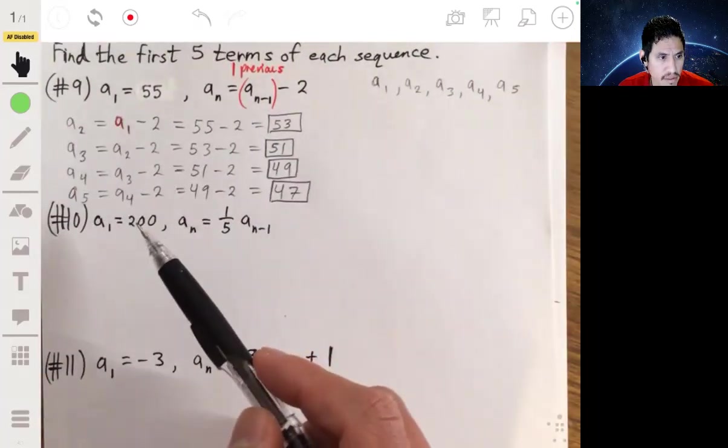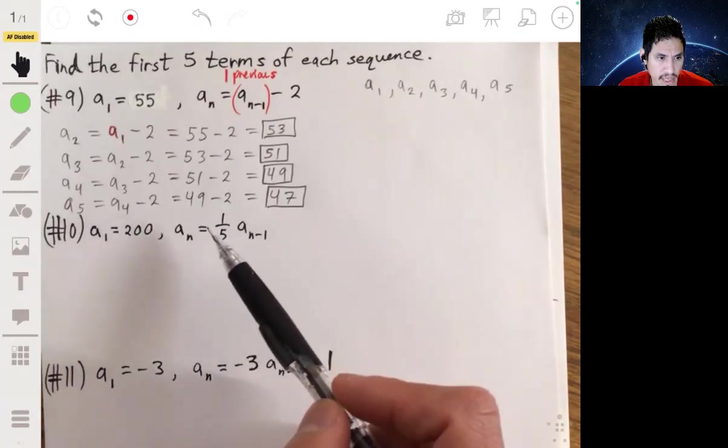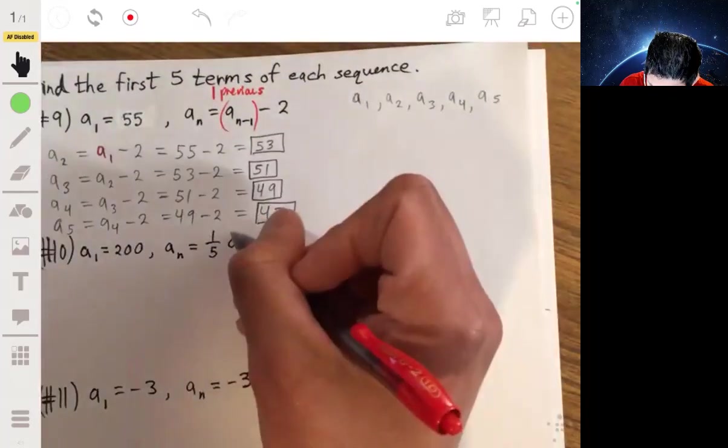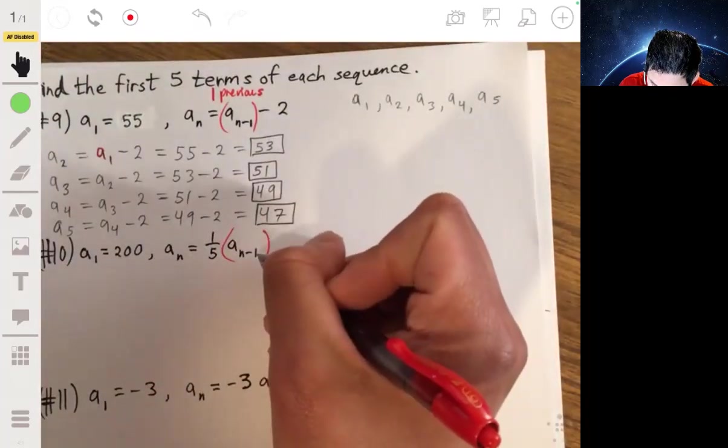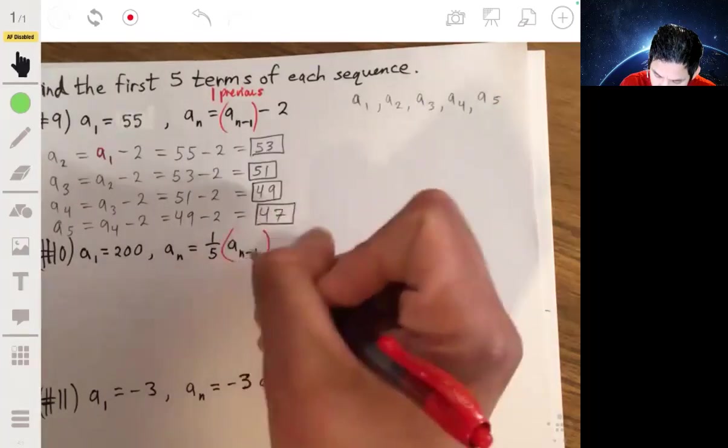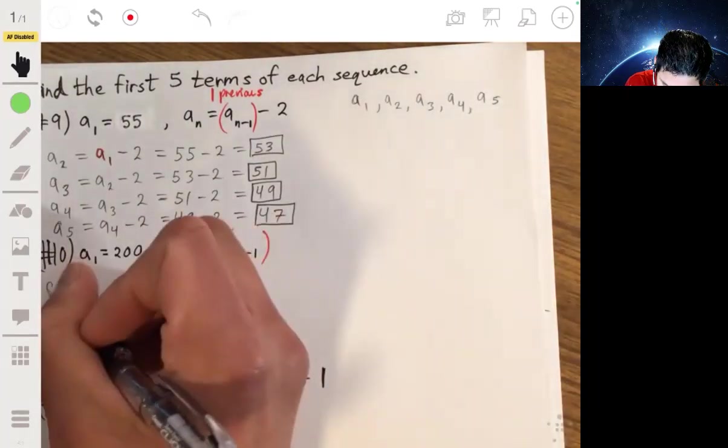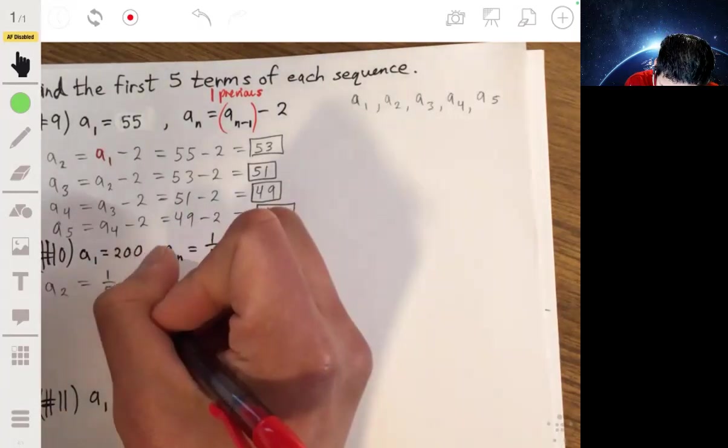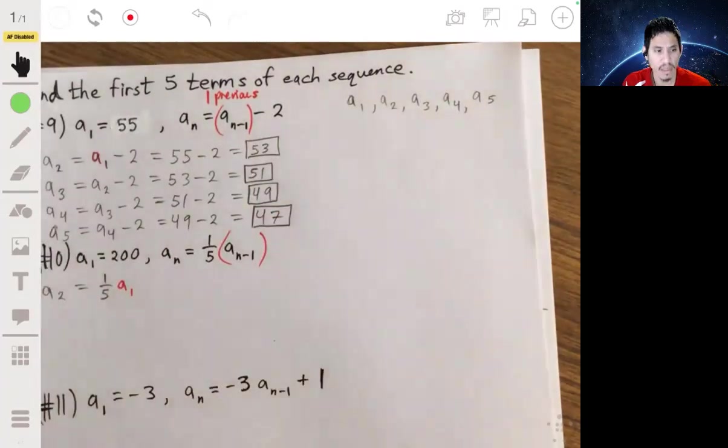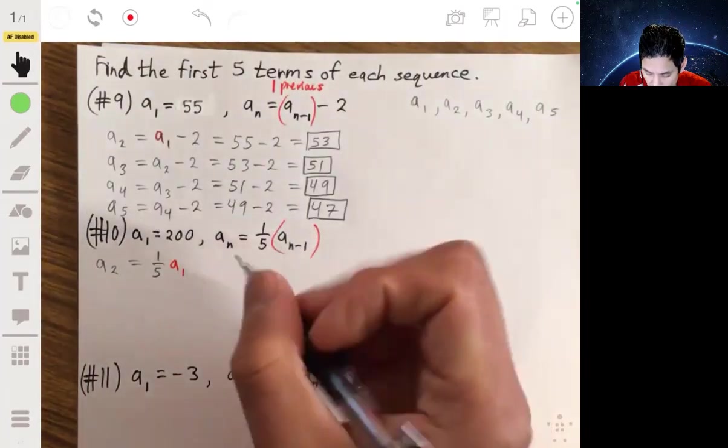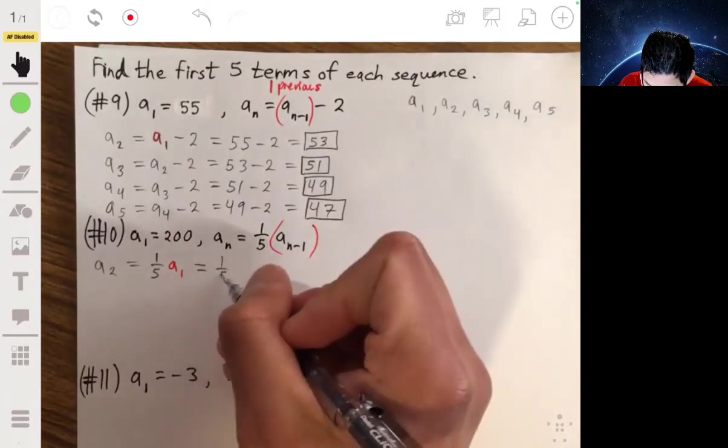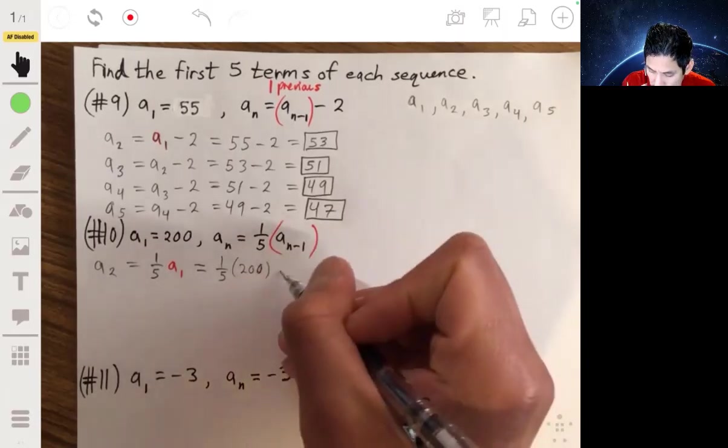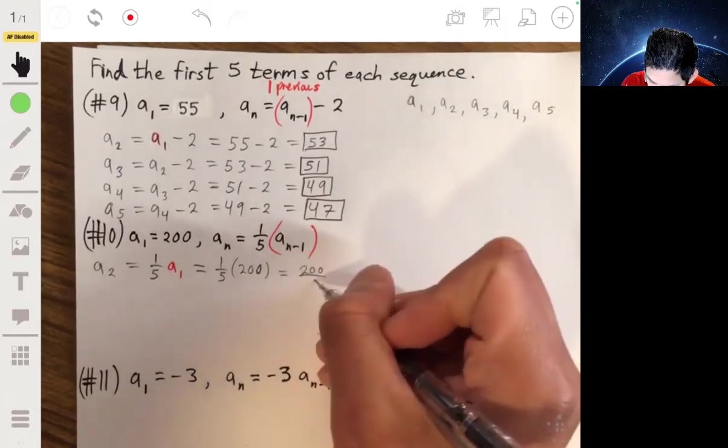So let's look at number 10. a1 is equal to 200, and the nth term, an, is equal to 1/5 times the a(n-1) term, or 1/5 times the previous term. So a2 would be equal to 1/5 times a1. So a2 would be 1/5 times 200, or 200 over 5, which would just be 40.